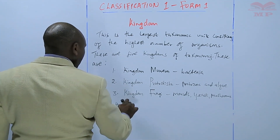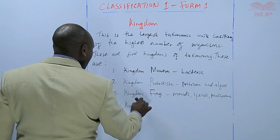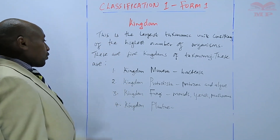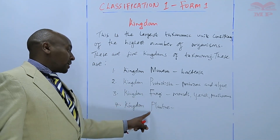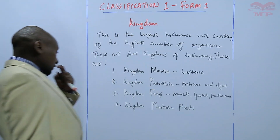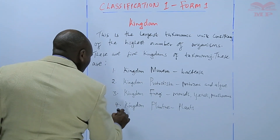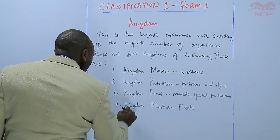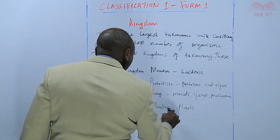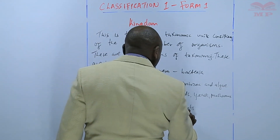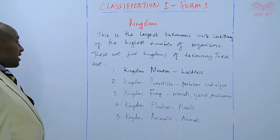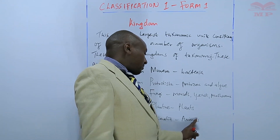Number four, we have kingdom Plantae. When writing Monera, Protoctista, and Plantae, the first letter should be capital. We have the various types of plants here. And finally, we have kingdom Animalia, where we have the different types of animals, whether they are vertebrates or invertebrates.